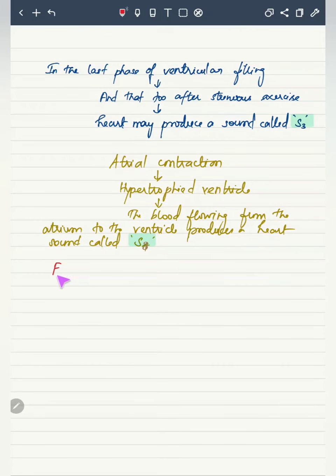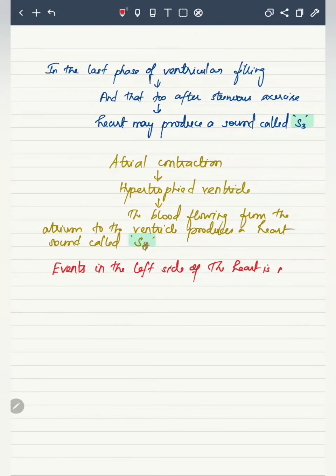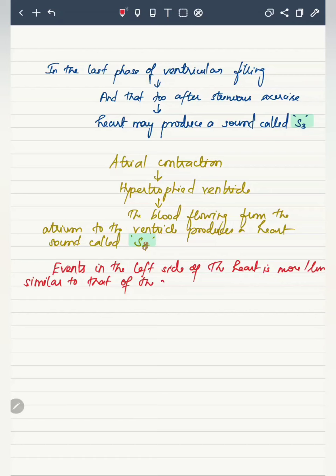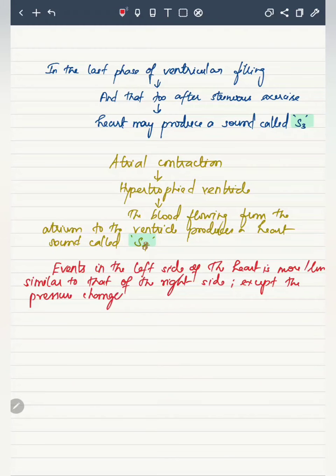The events in the left side of the heart are more or less equal to those in the right side, with a few differences. The pressure inside the aorta varies from 80 to 120 mmHg, whereas the pressure inside the pulmonary artery varies between 8 to 25 mmHg.